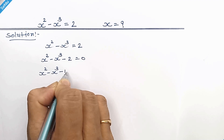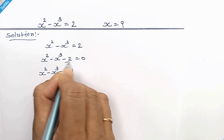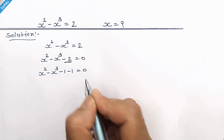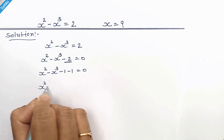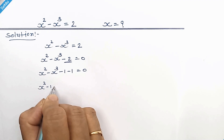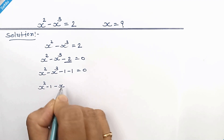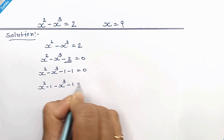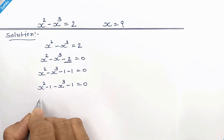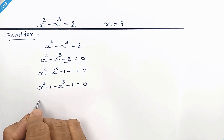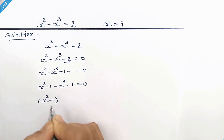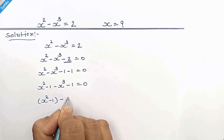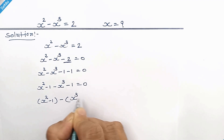Now we can write negative 1 and negative 1 in place of negative 2. Let's rearrange, so it becomes x squared minus 1 minus x cubed minus 1 is equal to 0. Let's put the brackets.